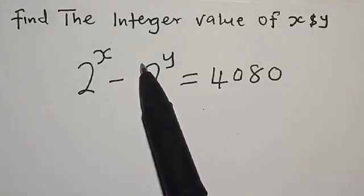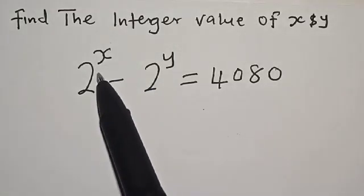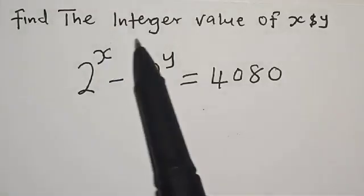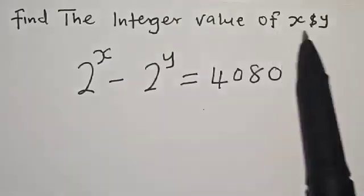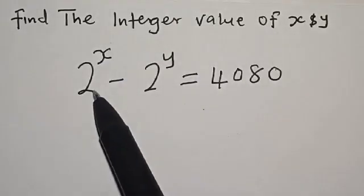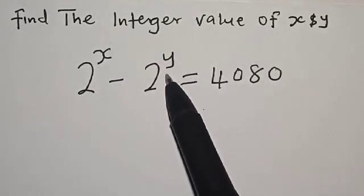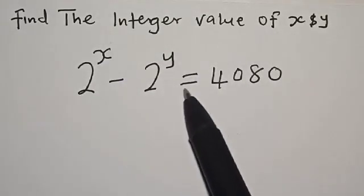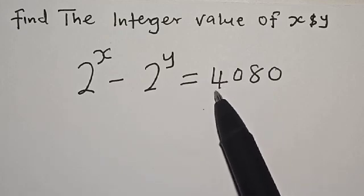Welcome to Math Gist. In this class, we want to find the integer value of x and y, where 2 raised to power x minus 2 raised to power y is equal to 4080.